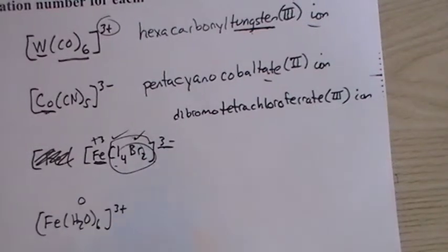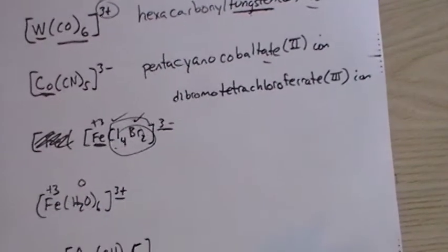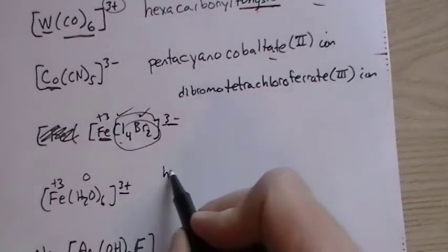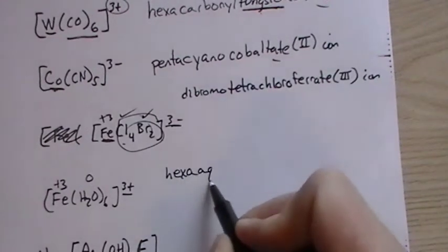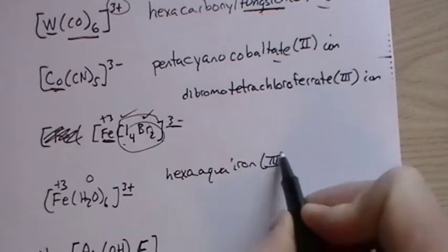Here, water has zero for its oxidation state, so this must be plus three for the iron. It's part of a cation, so we're going to leave the iron name alone, and this would be hexaaquairon(III) ion.